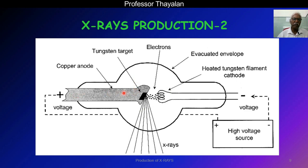The left-hand side is the anode, which is positively charged, and the black surface is the tungsten target. The right side is the filament cathode — the cathode consists of a tungsten filament and is negatively charged. When the filament is heated, electrons are liberated by thermionic emission. These electrons are attracted towards the anode, where they are stopped, and the kinetic energy of the electrons is converted into X-rays. During this process, a large amount of heat is also produced.